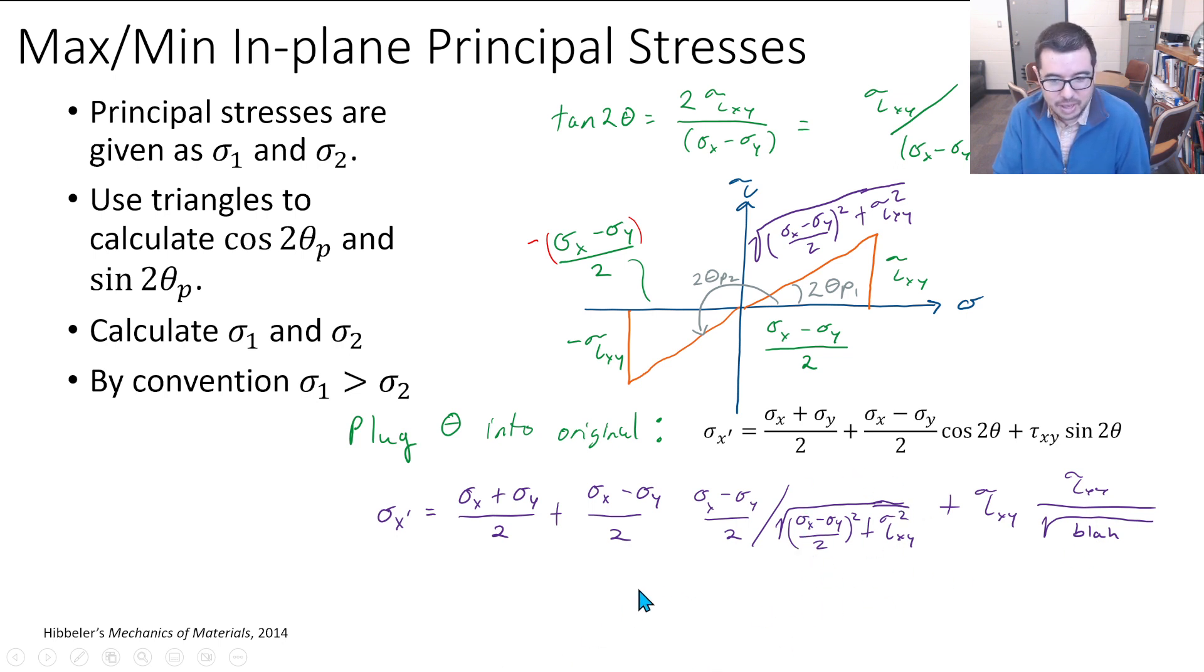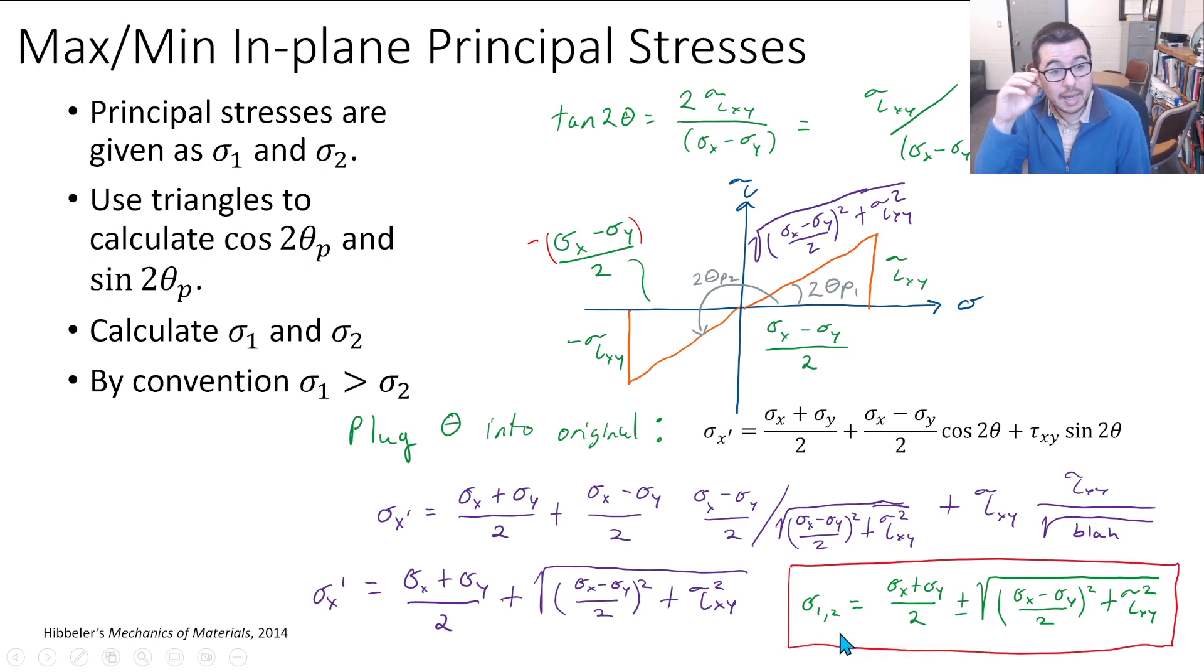Now we have an expression for sigma x prime, and we can come up with an expression for sigma y prime. We can say that we have sigma 1, 2 - these are our values for our max and our min in-plane principal stresses given with one nice algebraic formula.